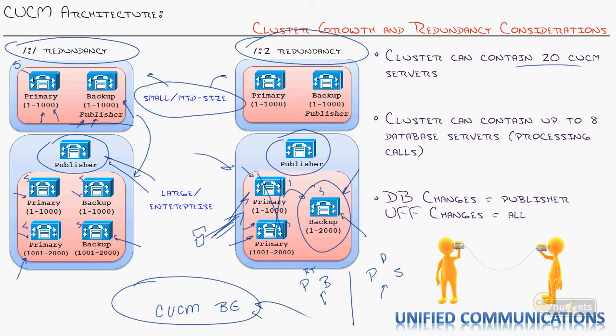Regarding cluster sizing: a cluster can contain up to 20 Call Manager servers. However, only eight of them can process calls. The additional servers can handle separated functions like a dedicated TFTP server, music-on-hold server, or conference server. But only eight servers can be part of the database tier — meaning one publisher and seven subscribers — and those are the ones that do the workhorse function of processing calls.